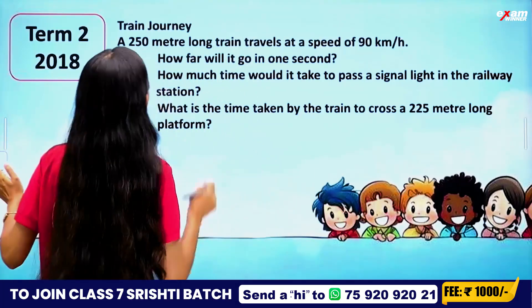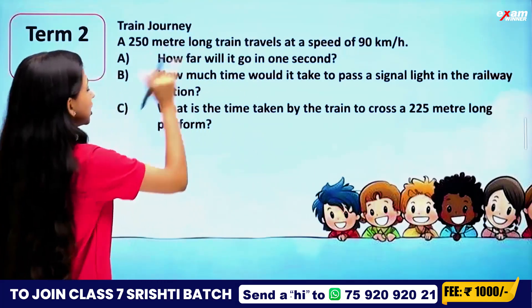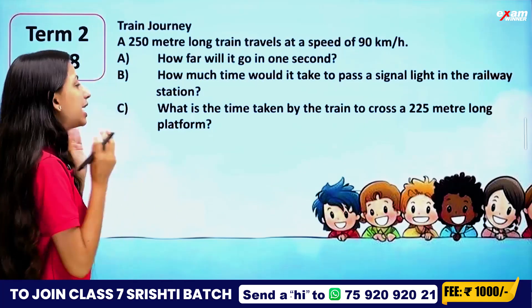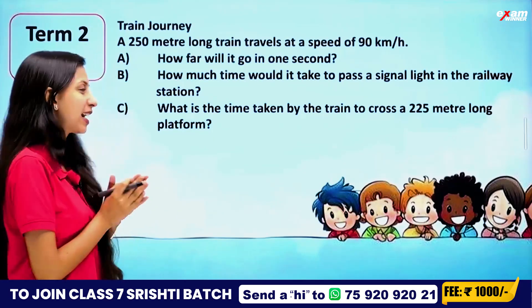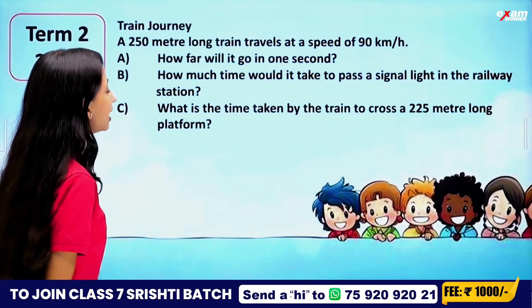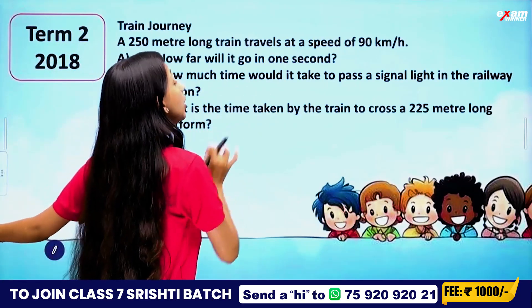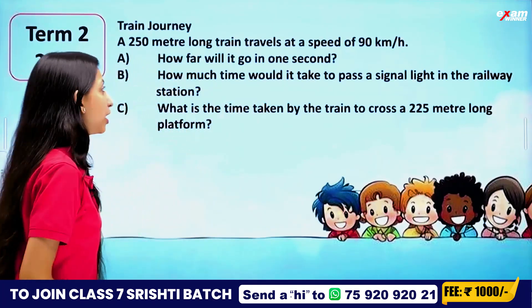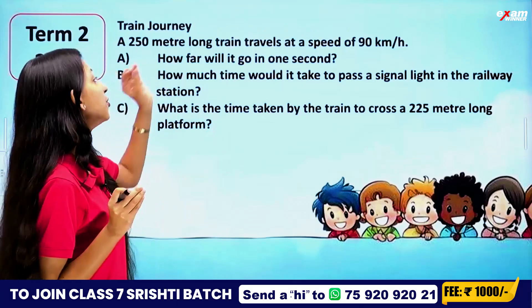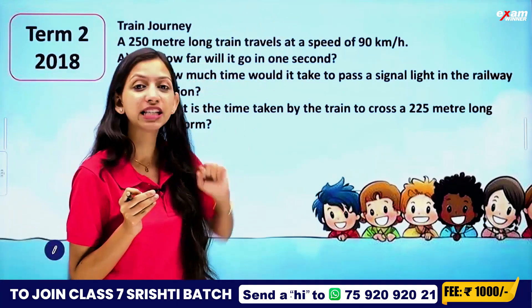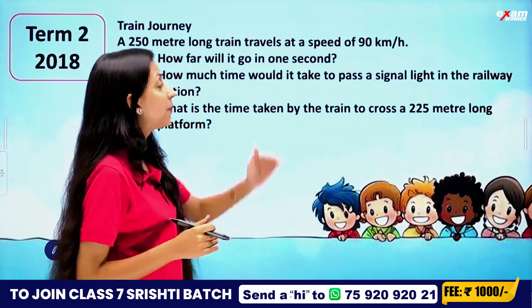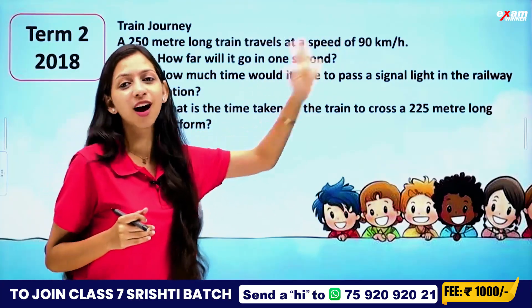Now, we have a question. This is a train journey. A 250-meter-long train travels at a speed of 90 km per hour.